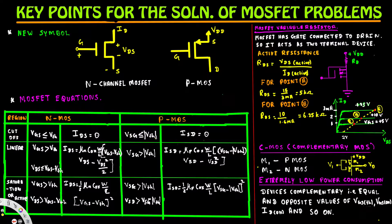For the linear region, for N-MOSFET, VGS has to be greater than V-threshold and VDS has to be less than or equal to VGS minus V-threshold. In that condition, we use this equation: IDS equals mu_N · COX · (W/L) · [(VGS − V_threshold) · VDS − VDS² / 2].